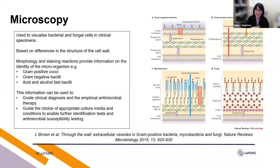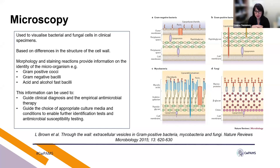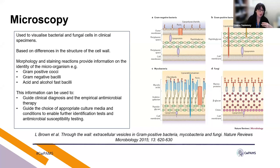I'm going to start by talking about microscopy, one of my favourite parts of bench microbiology. Microscopy is used to visualize bacterial and fungal cells if they are present in a clinical specimen. Between bacteria and fungi, different stains will be retained and lost based on the structure of the cell wall. Examples include gram-positive, gram-negative, mycobacteria, and fungi — very clear differences in cell wall structure that provide initial identification information and help guide diagnosis, empirical antimicrobial therapy, and further laboratory testing.